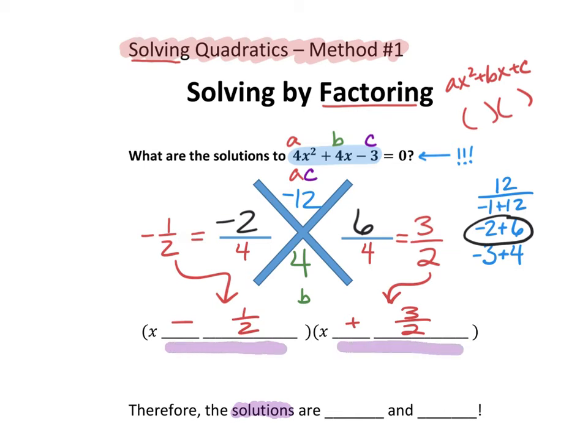The solutions for this quadratic are the opposite terms than you have written in the parentheses. So the opposite of negative 1 half is positive 1 half. And the opposite of positive 3 halves is negative 3 halves. And those are my solutions.